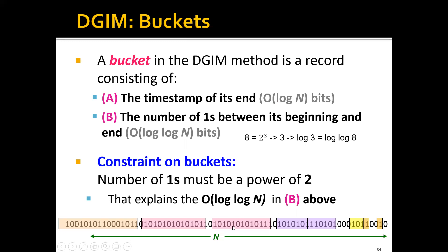For example, let's take eight. To store this number eight, since we know that this number has to be a power of two, this is equal to two to the power of three. Therefore, we actually only need to store the exponent three. To store the integer three, we only need log three bits. This is why we only need log log n bits to store a number — in general, to store a number at most n, we will need only log log n bits.